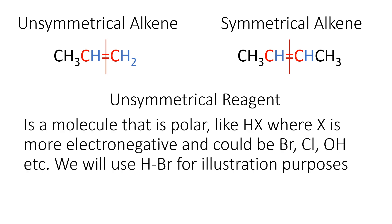An unsymmetrical reagent is a molecule that is polar, like HX, where X is a more electronegative atom. It could be bromine, chlorine, or hydroxide. In the example we are going to use, we will be using HBr. HBr is a polar molecule because Br is more electronegative than hydrogen. Therefore, it gains a delta negative charge and hydrogen gains a delta positive charge, making it an unsymmetrical reagent.